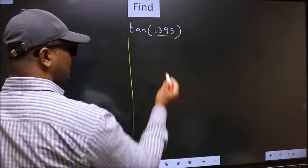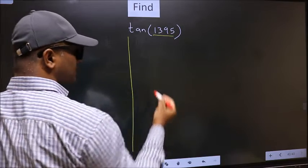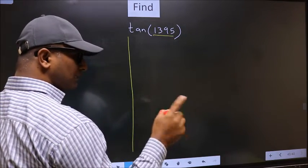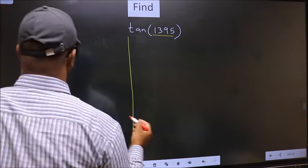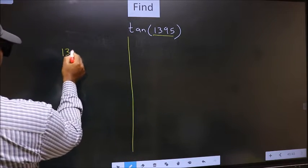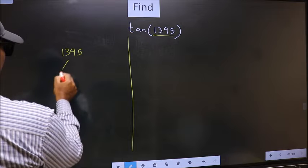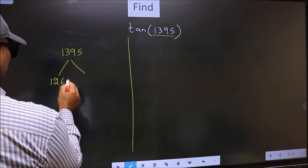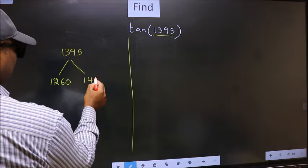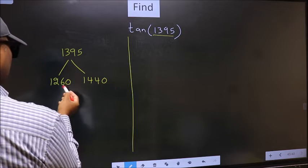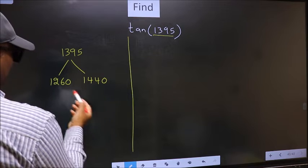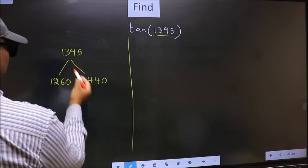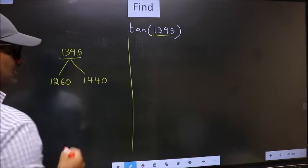Now we should check 1395 lies between which two multiples of 180. What I mean is, 1395 lies between 1260 and 1440. This is 180 times 7 and this is 180 times 8. Between these two numbers, 1395 lies.